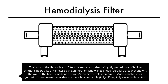The body of the hemodialysis filter — let's call it deflux — is comprised of a tightly packed core of hollow synthetic fibers, like tiny straws as shown here, or as sandwich sheets not shown here. The wall of the fiber is made of a porous, semi-permeable membrane.